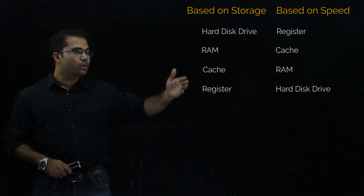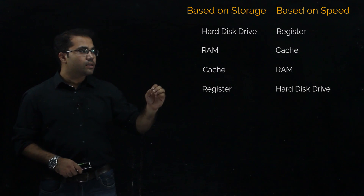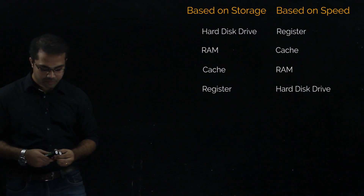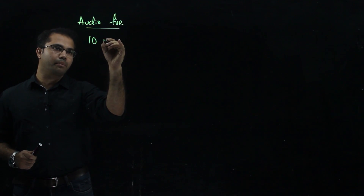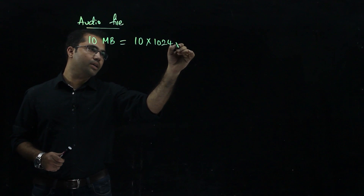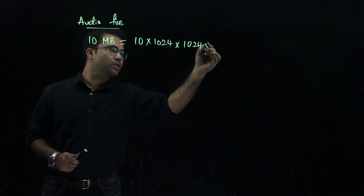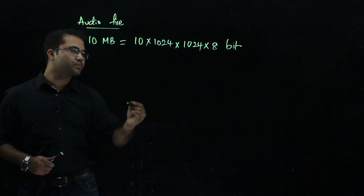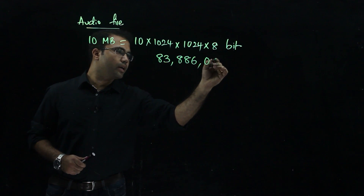So we can categorize these devices in two ways — with respect to storage and with respect to access time. To understand better, let us take one example: the task expected from a software or an app is to execute an audio file. Let us take the size of this file as 10 MB, which is 10 × 1024 × 1024 bytes × 8 bits, giving us 83,886,080 bits.